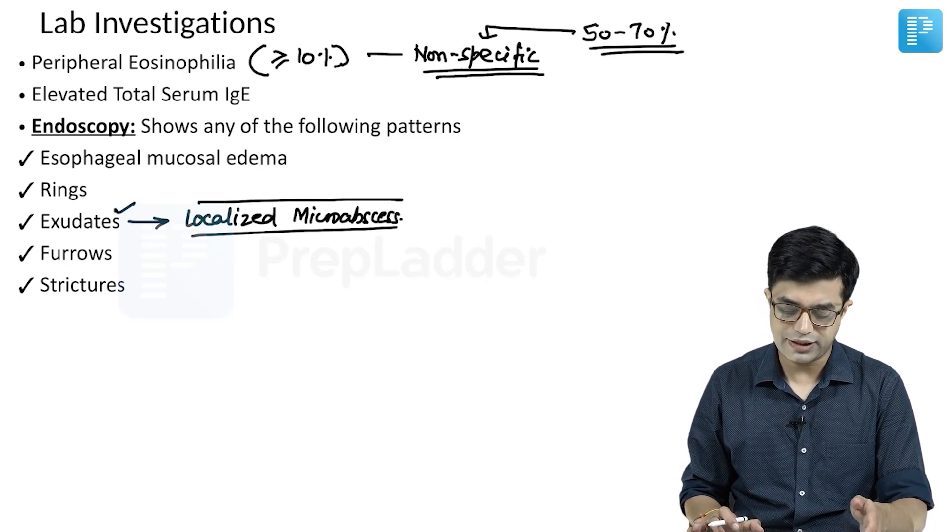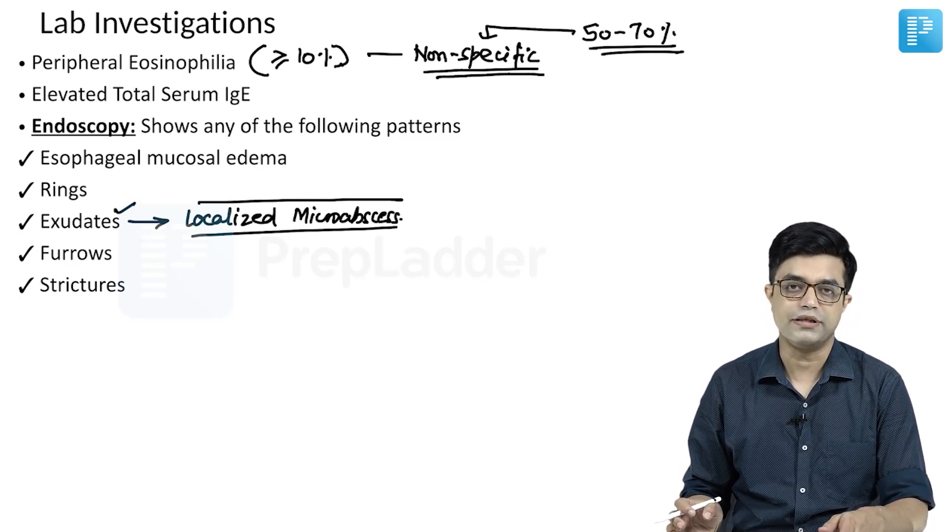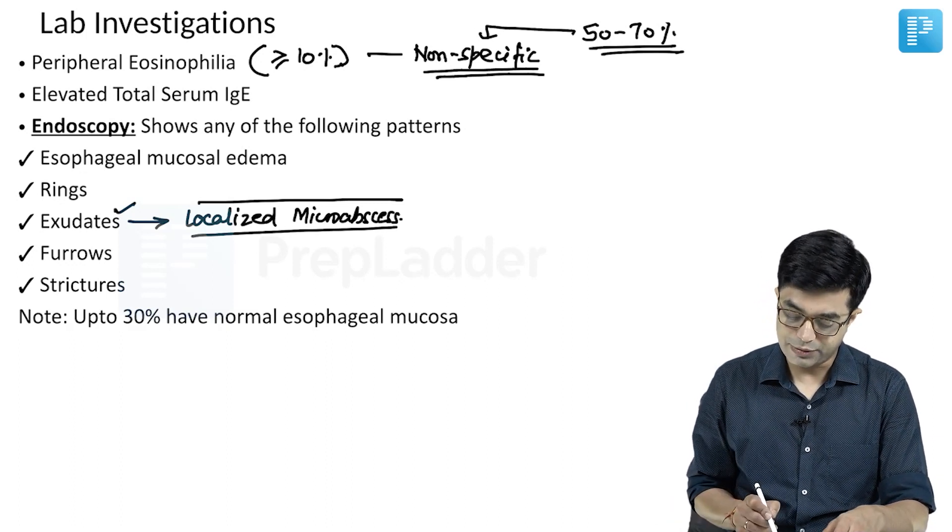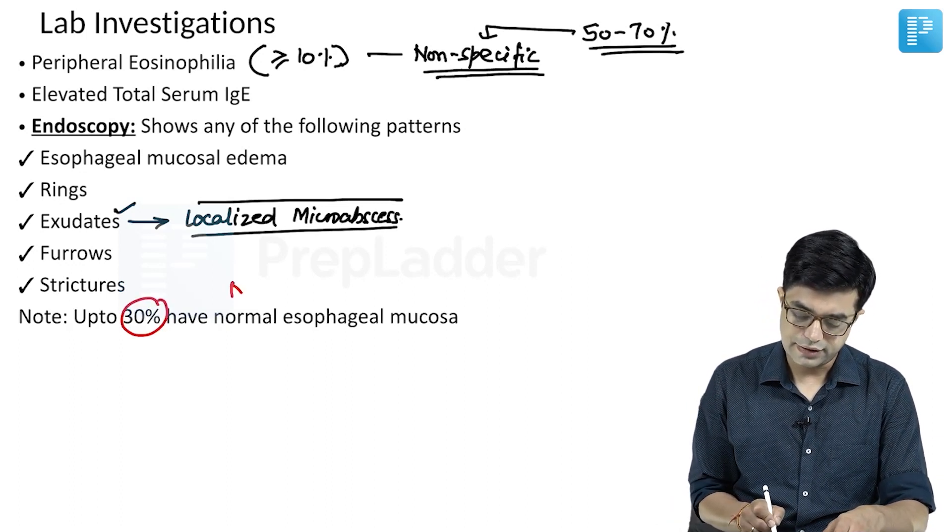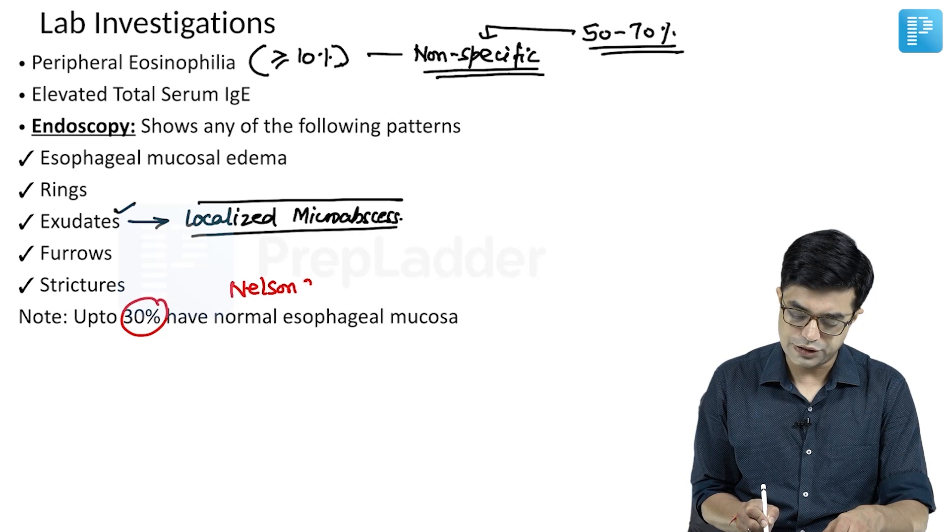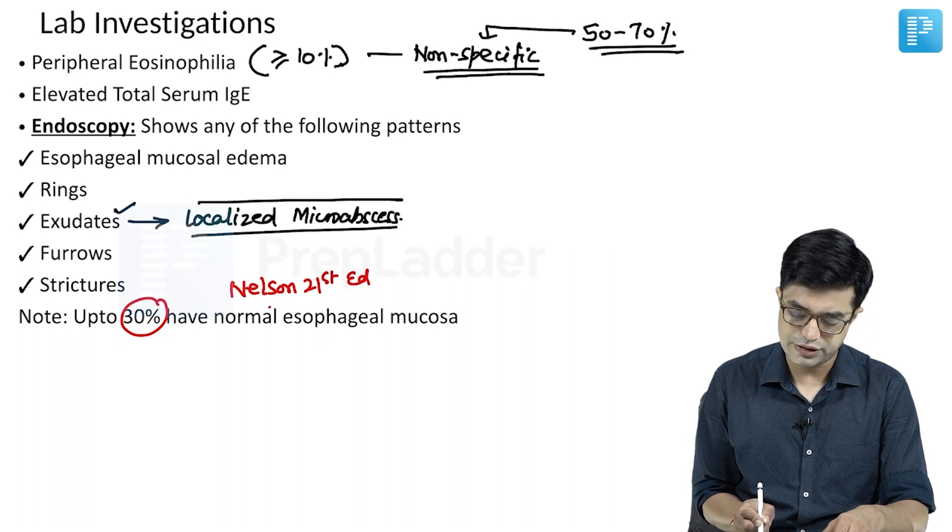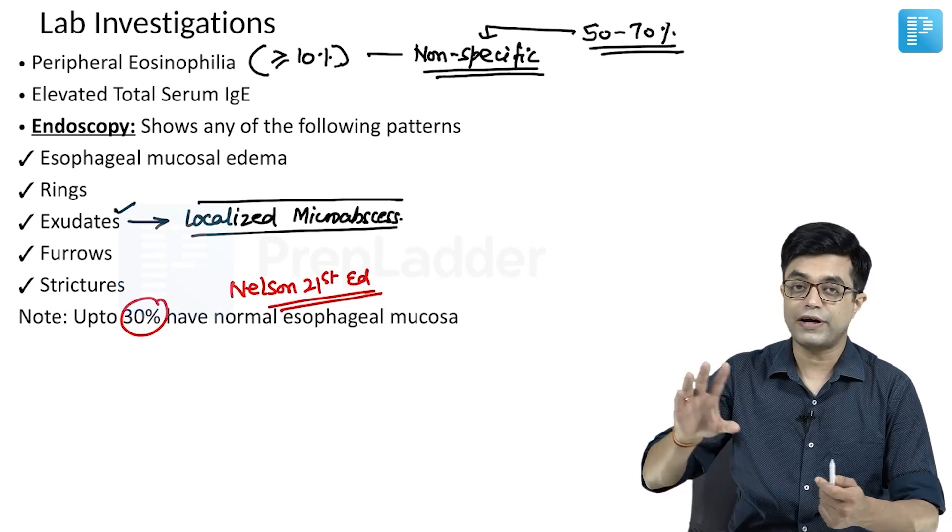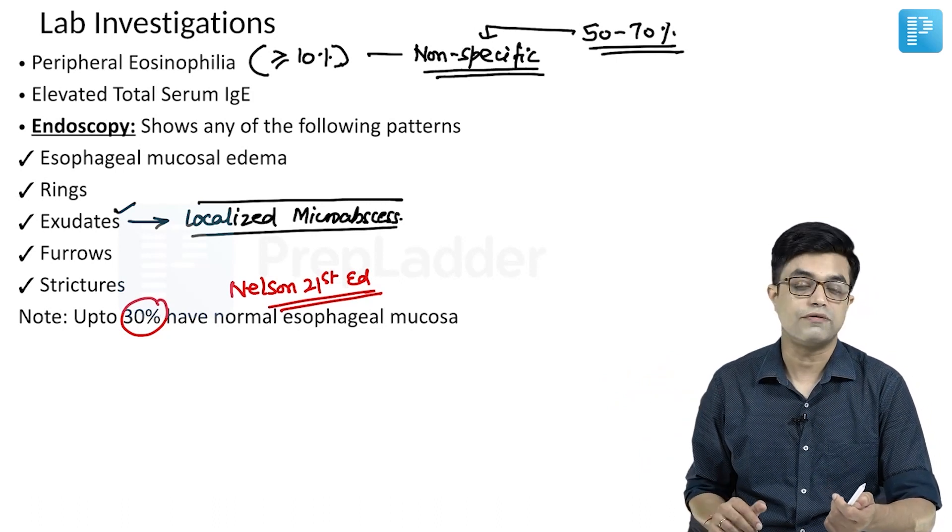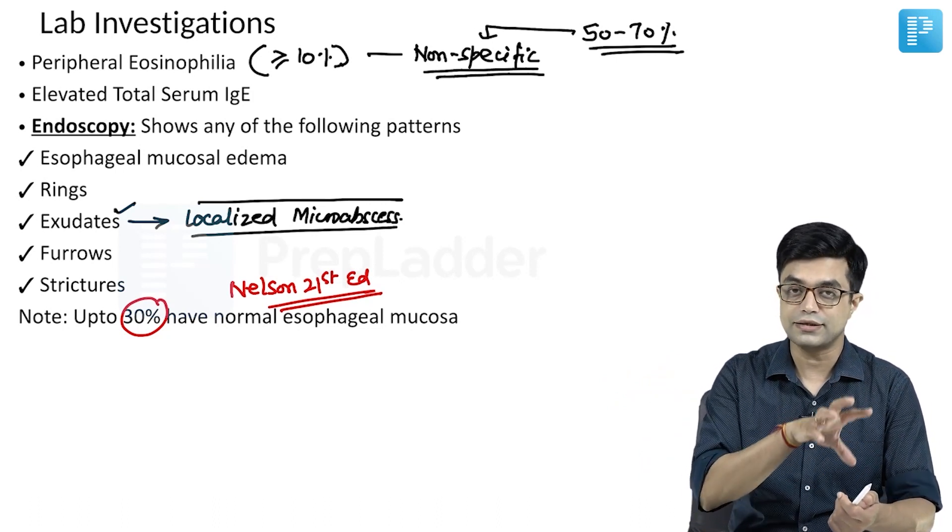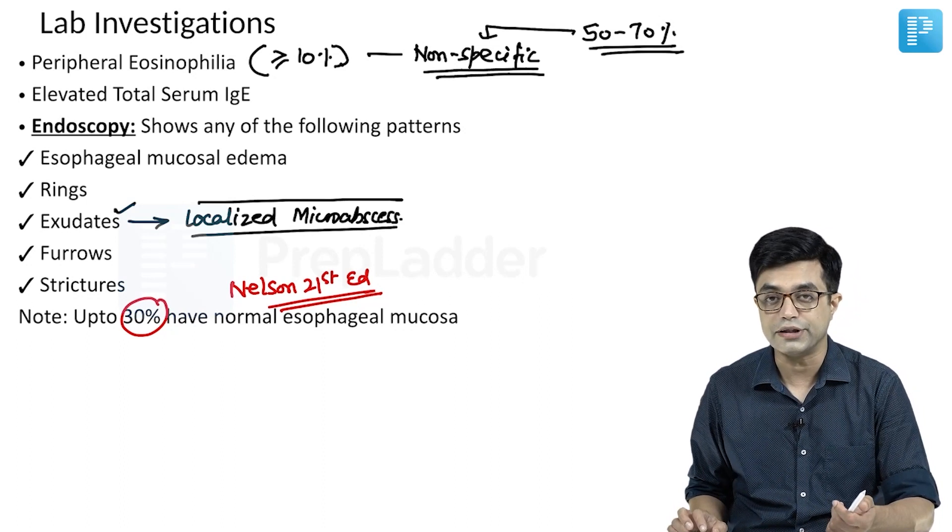Up to 30% can have normal esophageal mucosa according to Nelson. Absence of endoscopic findings do not rule out eosinophilic esophagitis, however their presence is a strong clue the patient has the disease.